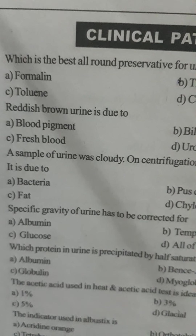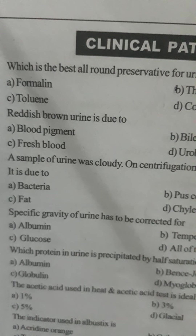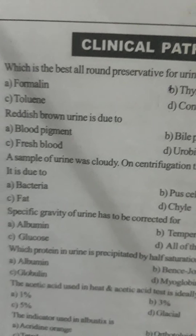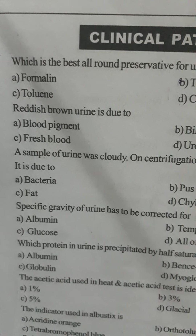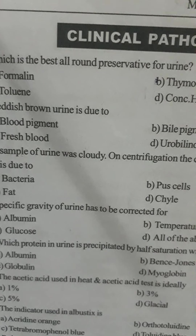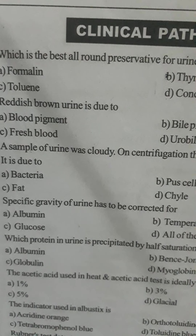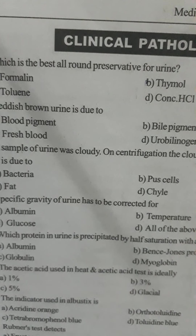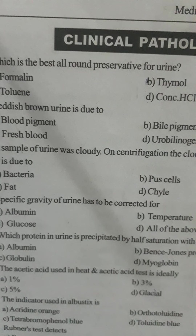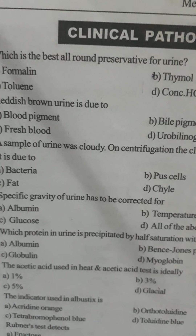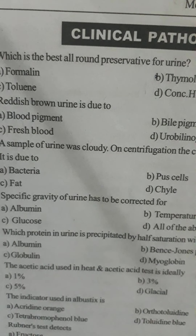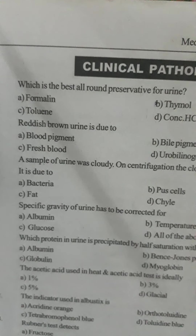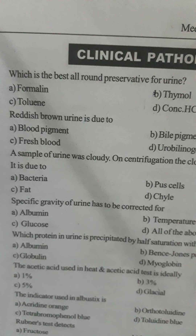Assalamu alaikum friends, welcome to my YouTube channel. Today I am discussing some MCQs about clinical pathology. Question number one: which is the best all-round preservative for urine? Option A: formalin, Option B: thymol, Option C: toluene, Option D: concentrated HCl. The answer is Option C, toluene.